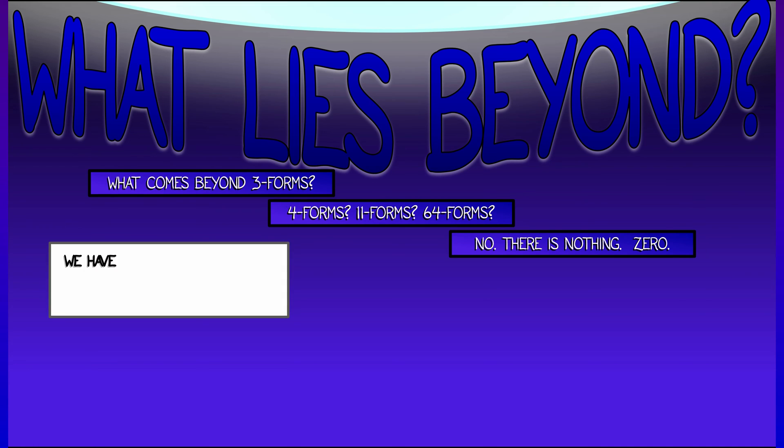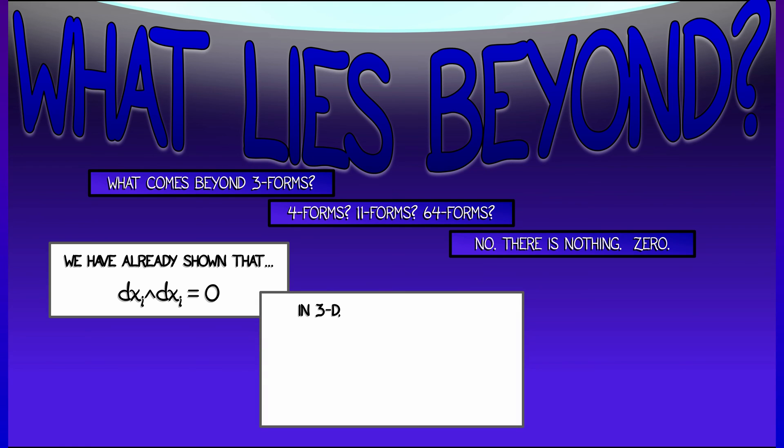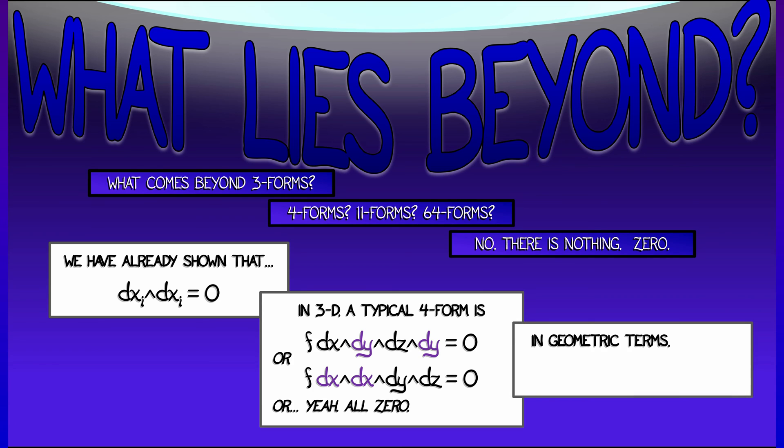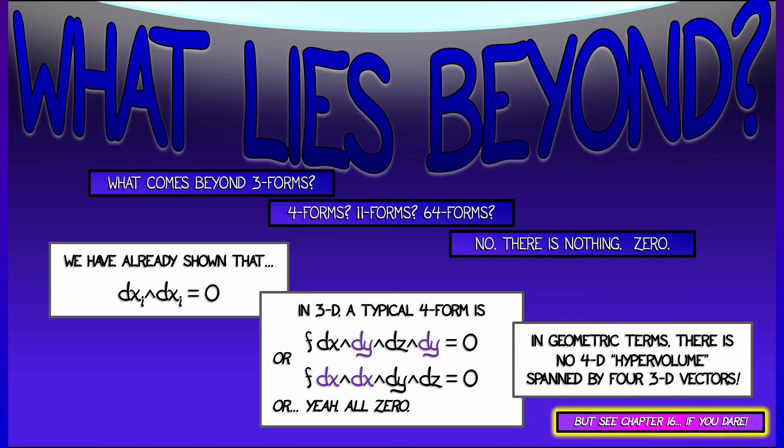Why? Because dxi wedge dxi is zero for any value of i. So if I tried to write down a basis four form in 3D, it would have to be something like dx wedge dy wedge dz wedge one of the other guys like dy or dx. And that repeated term gives me a zero. If I think about this geometrically, what that means is that oriented four-dimensional volume doesn't really make sense when you're looking at a region that is spanned by vectors that are restricted to 3D.